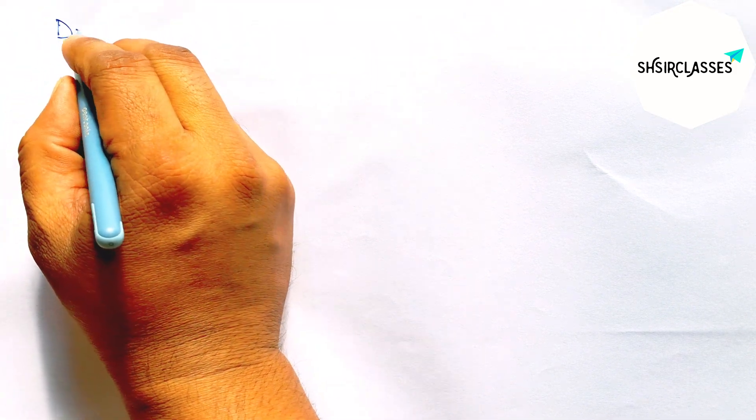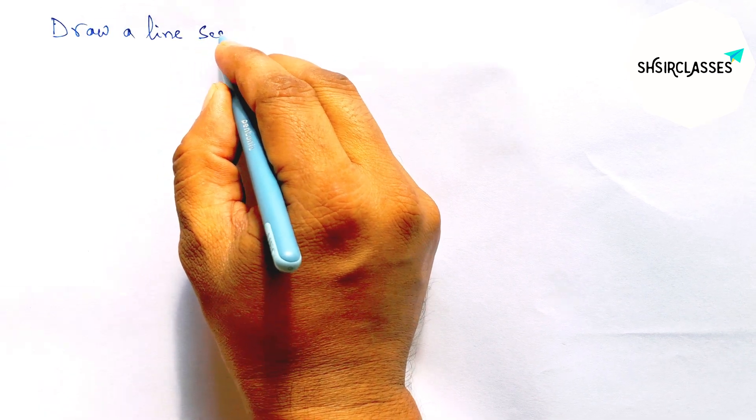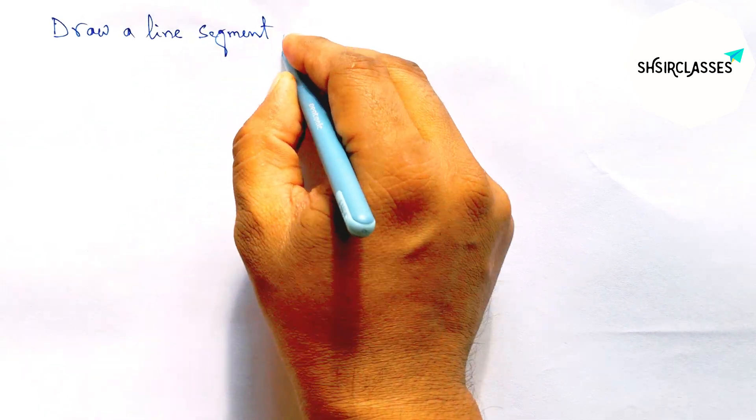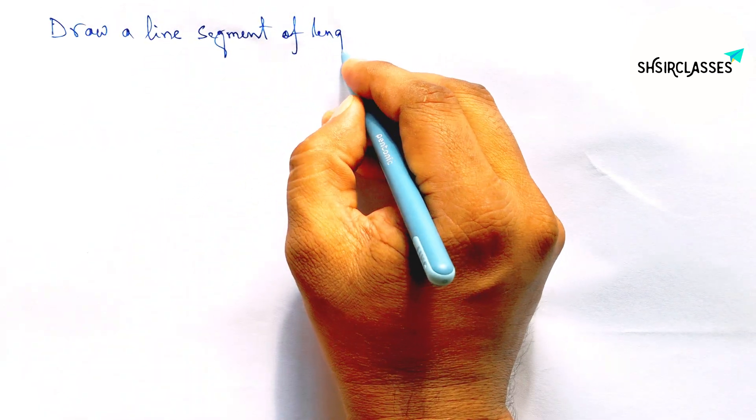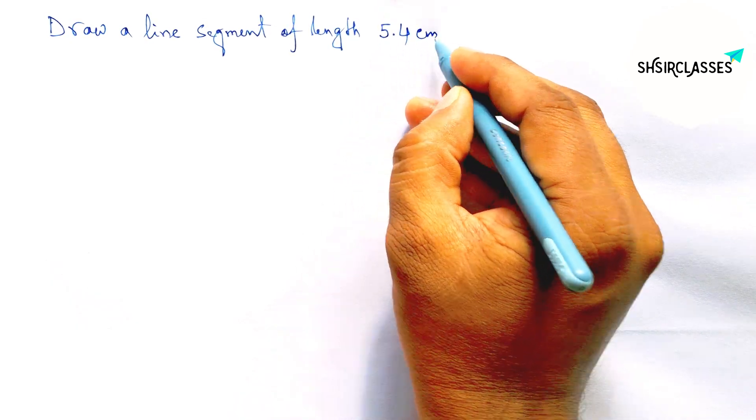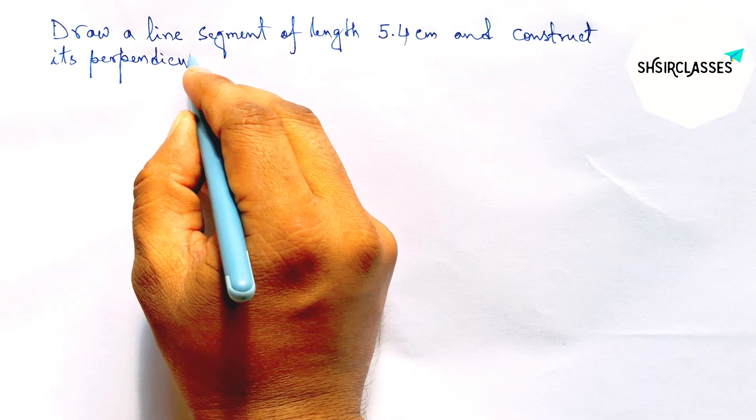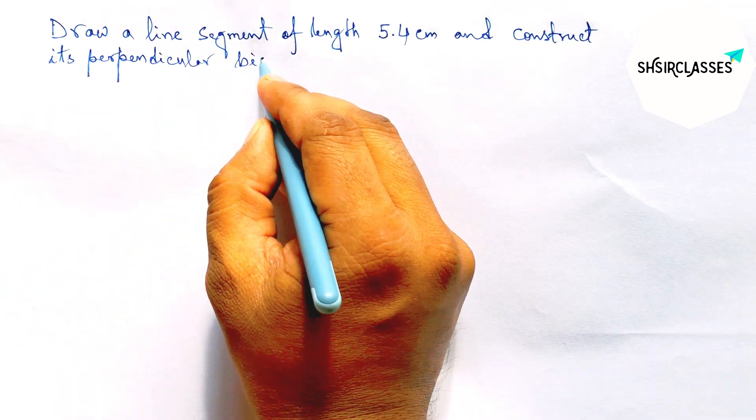Hi everyone, welcome to Sasi Share Classes. Today in this video, draw a line segment of length 5.4 centimeter and construct its perpendicular bisector to the given line in an easy way. So please watch the video till the end.